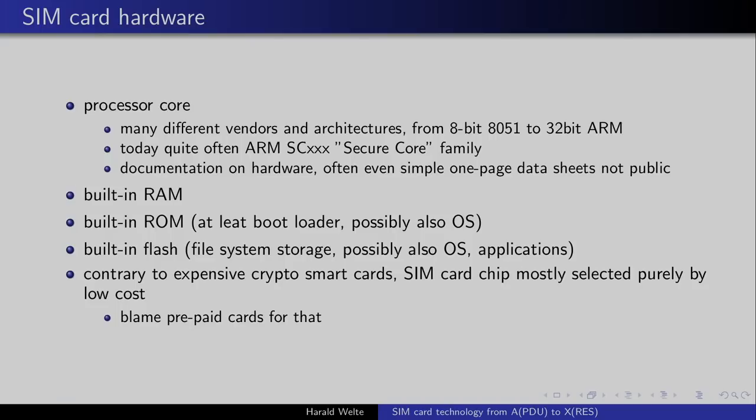Unfortunately, contrary to crypto smart cards where higher prices allow rather expensive products, SIM cards are mostly selected purely by cost these days due to the prepaid boom. When GSM was introduced, with hundreds of euros in revenue per subscriber you could invest a lot in a SIM card. But prepaid cards thrown away daily can only cost cents, and then you need to pay for the Java card VM patent royalties on top — you basically cannot afford to pay much for SIM cards anymore. This also explains why a lot of SIM cards today don't have hardware crypto and implement it in software instead, because it's cheaper.